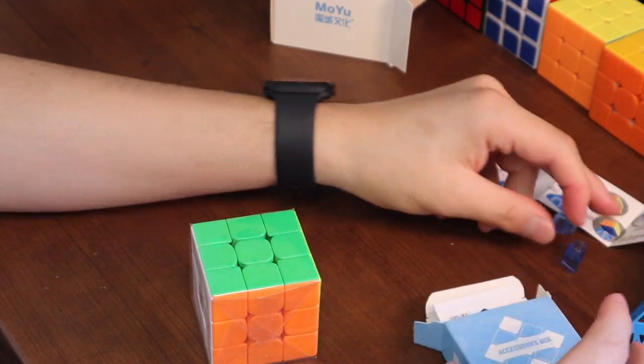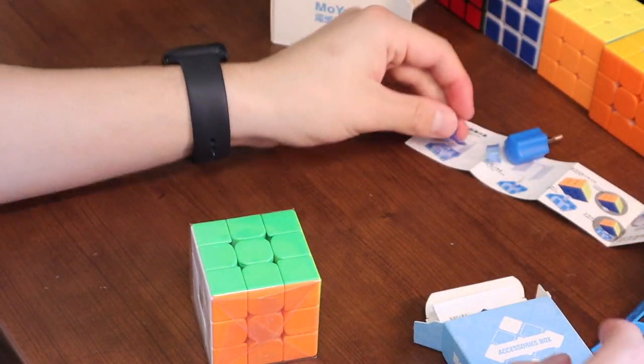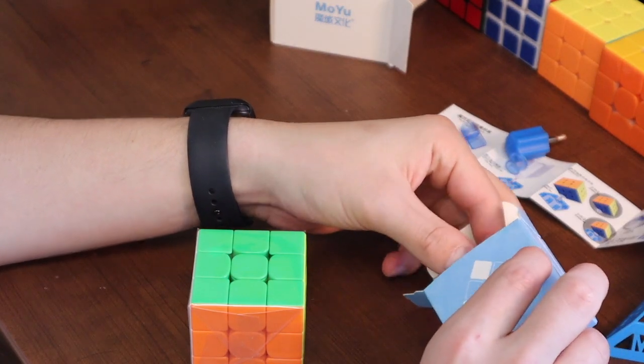And then we have these, and it looks like these are the tools that were on this package that are used to change the way the cube feels.